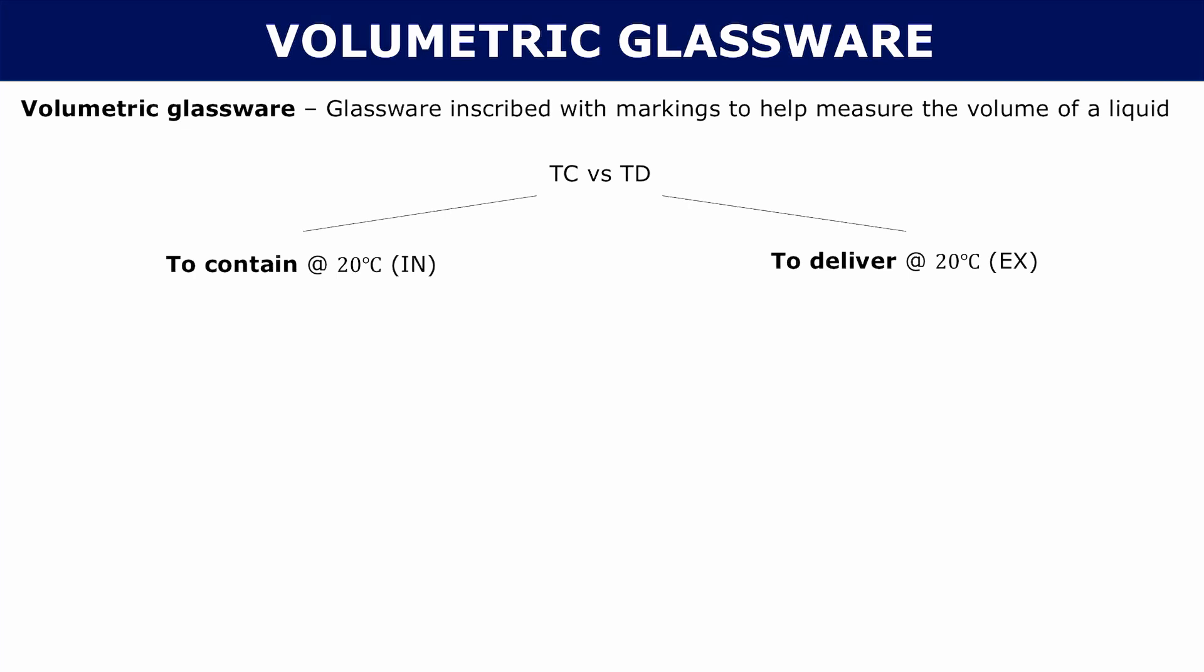You can have TC glassware and TD glassware. TC means to contain. When we're talking about TC versus TD, we're talking about 20 degrees Celsius. Volumetric glassware is going to be marked either TC or TD, and they mean two separate things.